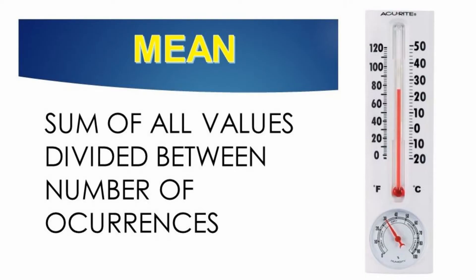Central tendency's most well-known parameter is the mean. The mean is the sum of all values divided by the number of occurrences. Another central tendency measure that is less common is the median. For the median, we sort the data from the lowest to the highest value and select the one that is at the 50% point, right in the middle. The good point about the median is that it is not affected by extreme values.